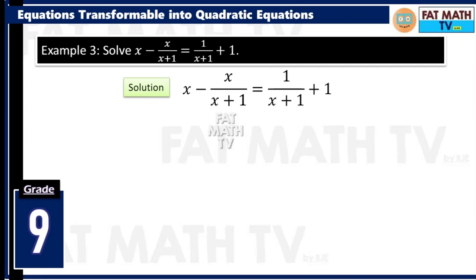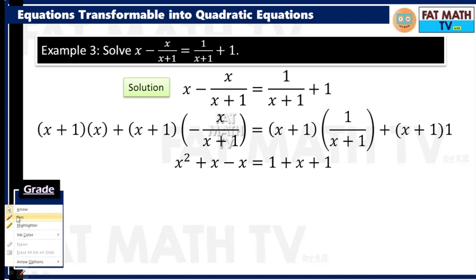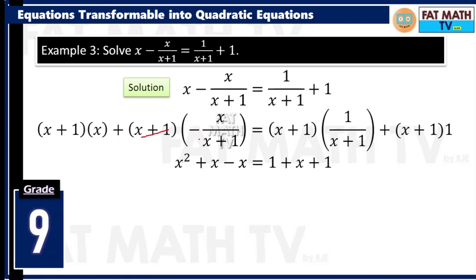Each term of this equation will be multiplied by x plus 1. So x is multiplied by x plus 1 — that is x squared plus x. This expression negative x over x plus 1 multiplied by x plus 1 — x plus 1 cancels — you will have negative x. And 1 over x plus 1 times x plus 1 cancels to give positive 1. For the last term, distribute 1 to each: that's x plus 1. So x minus x here is 0 — you have x squared on the left, and 1 plus 1 is 2, copy x.